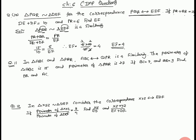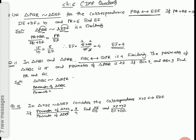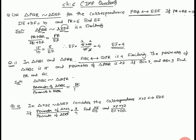Now we start question number 11. In triangle ABC and triangle PQR, correspondence ABC to QPR is a similarity. We start solution. Triangle ABC similar triangle QPR. Therefore perimeter of triangle ABC upon perimeter of triangle QPR equal to AC upon QR. Perimeter of triangle ABC is 15, perimeter of triangle PQR is 27. BC equal to 7, we find PR. QR equal to 9.